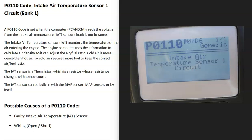So today I'm talking about a P0110 code, what it is and how you go about fixing it. And so what is a P0110 code? Well, it's an intake air temperature sensor 1 circuit bank 1.